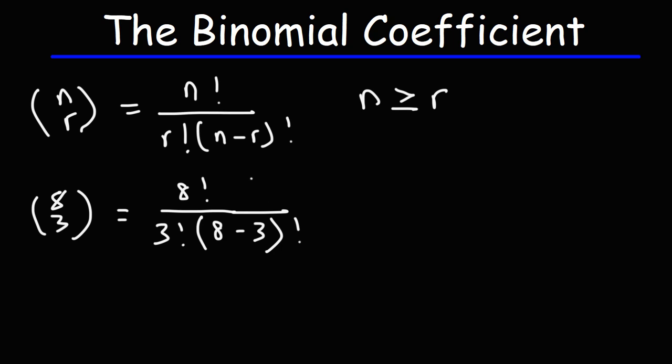So knowing that, we can evaluate this expression. We have 8 factorial over 3 factorial, and then 8 minus 3, that's going to be 5, so we have 5 factorial.